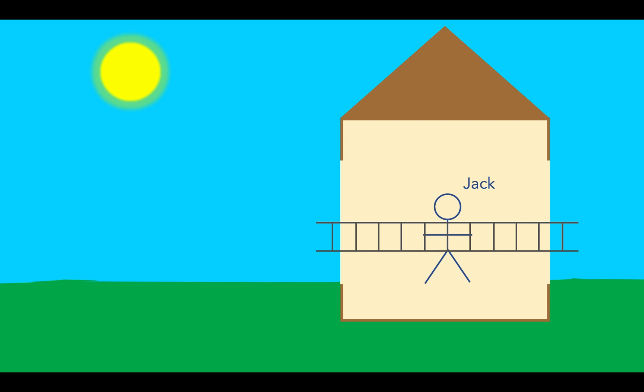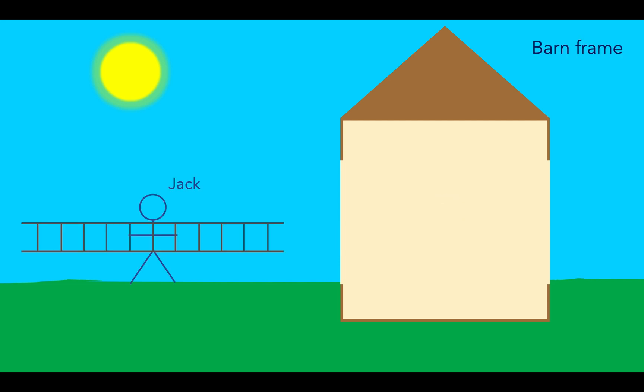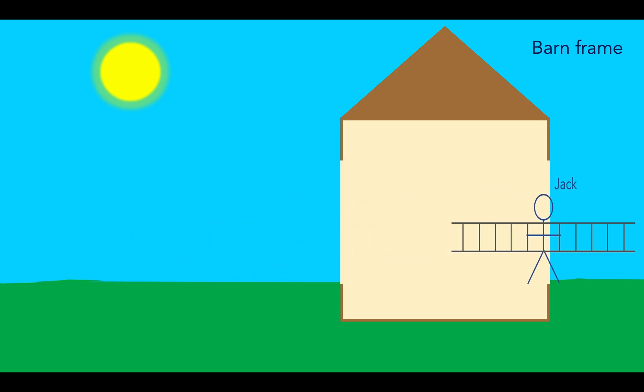However, Jack knows a thing or two about relativity, and he knows that moving objects will contract in their direction of motion. So he shoots off toward the barn at some very high velocity, and now the contracted ladder fits completely in the barn.